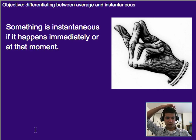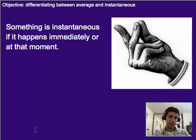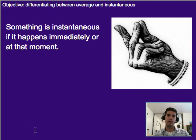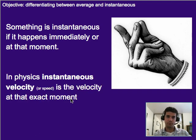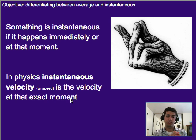So if we're talking about instantaneous, something that is instantaneous happens immediately — at that exact moment. If you think about a snap, that's usually our way of communicating that something is happening right now, and that's generally what instantaneous refers to. In physics, instantaneous velocity is the velocity at that exact moment in time, meaning it's not over a period of time, not over a stretch of one second or five seconds — it's the speed at that exact moment.